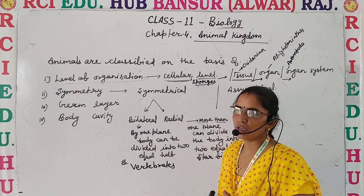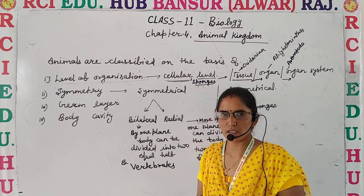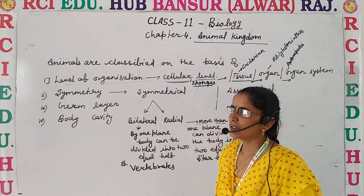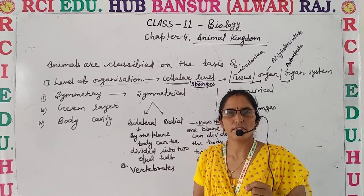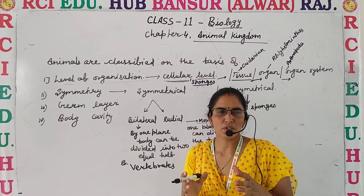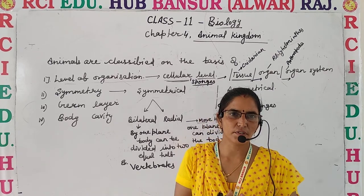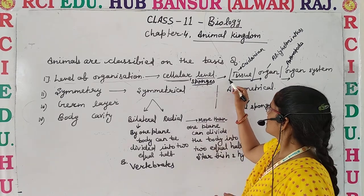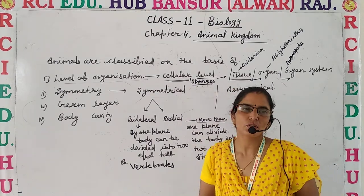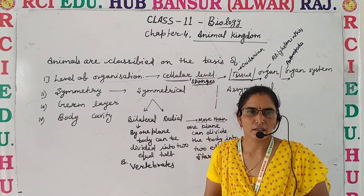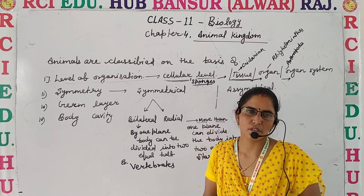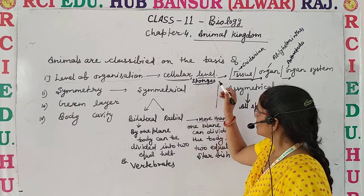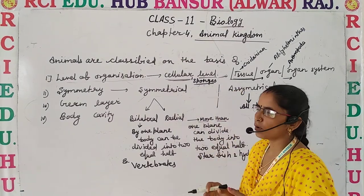As we move ahead, complexity should be increased. If we discuss about the sponges, they have only cellular level of organization — a specific cell performs all the metabolic activities of the body. Whereas cnidarians have a tissue level of organization, meaning cells combine to form tissue.